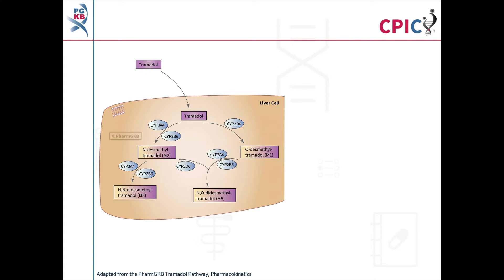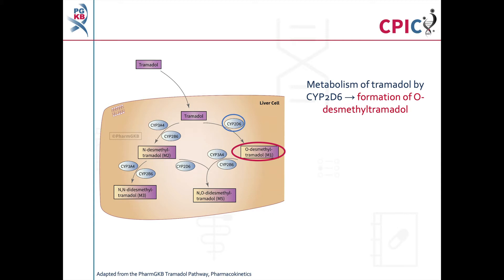This image is adapted from the PharmGKB tramadol pathway. A link to the original pathway is provided in the description below this video. Tramadol is metabolized in the liver to form a number of metabolites. Central to this guideline is the metabolism of tramadol by CYP2D6 to O-desmethyltramadol, which is the most active metabolite of tramadol and provides the analgesic effect.